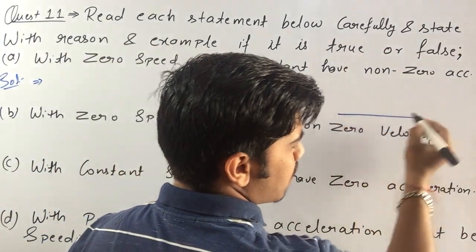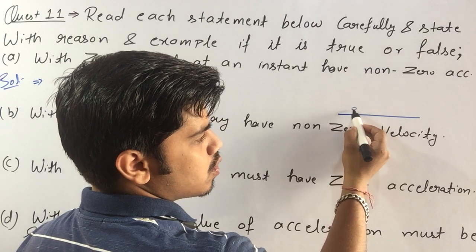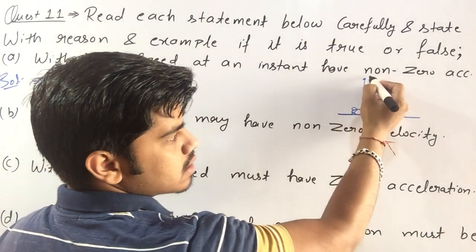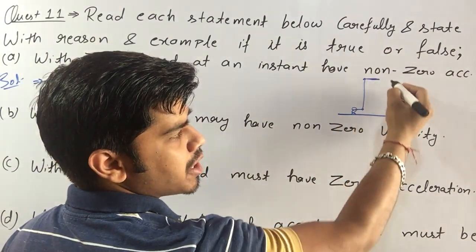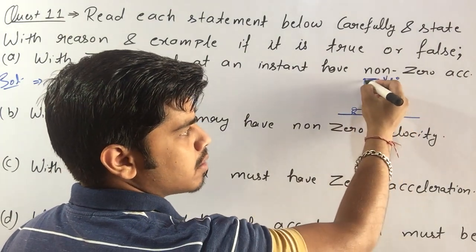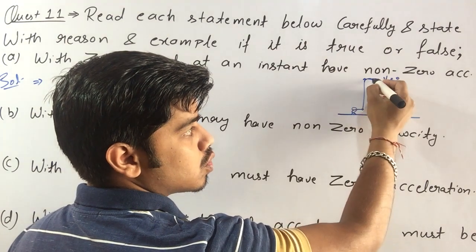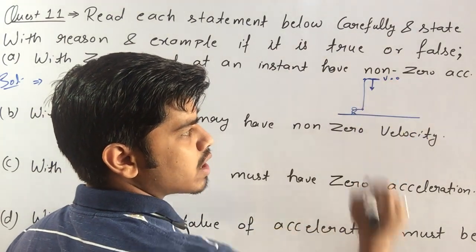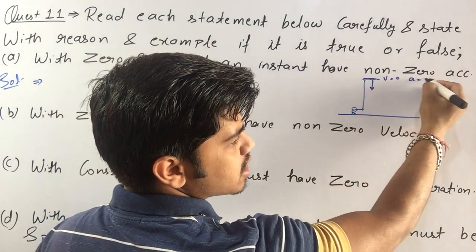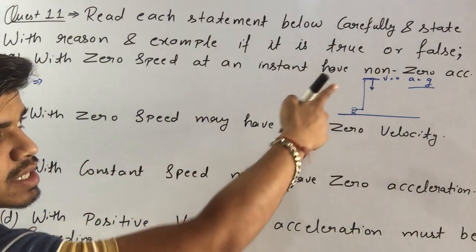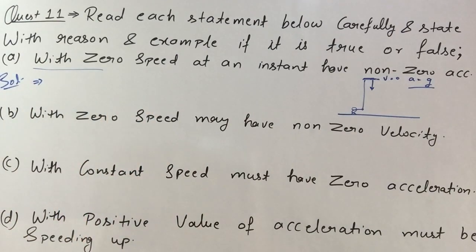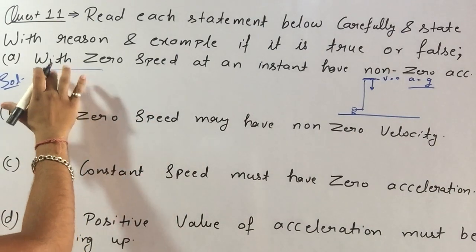Yes. In this case, if you project a body upward, at the extreme point speed will be zero for a particular instant of time. But acceleration will be g at that extreme point. So the situation described in the question is true — this happens in free fall or projectile motion.